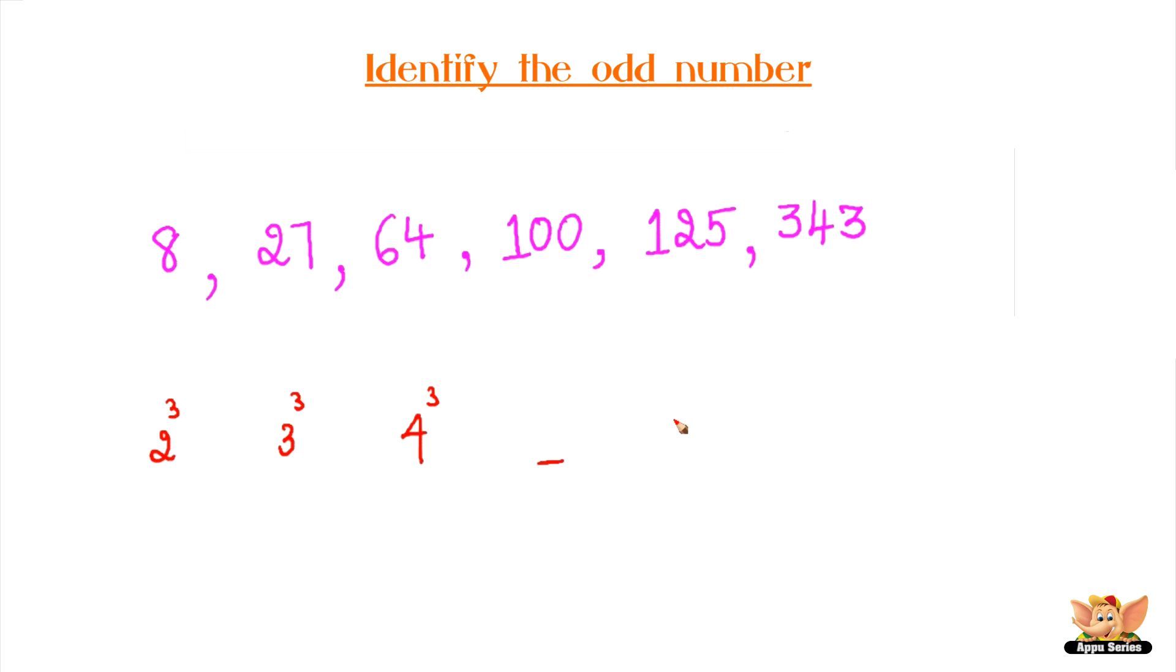5 cubed gives 125, 6 cubed gives 216, 7 cubed gives 343. Therefore, 100 is the odd one out.